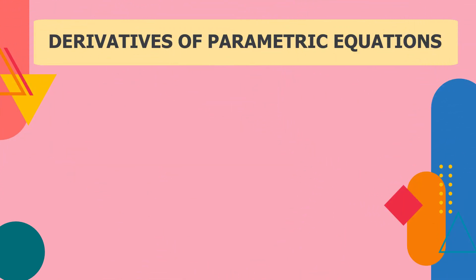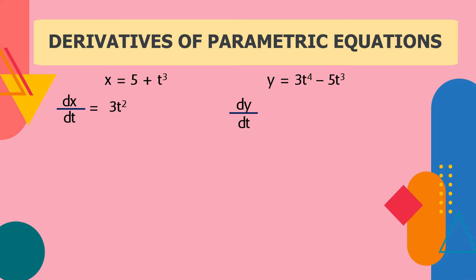Another example: x = 5 + t³ and y = 3t⁴ − 5t³. We're going to find the derivative of x with respect to t. The derivative of 5 is 0, and the derivative of t³ is 3t².